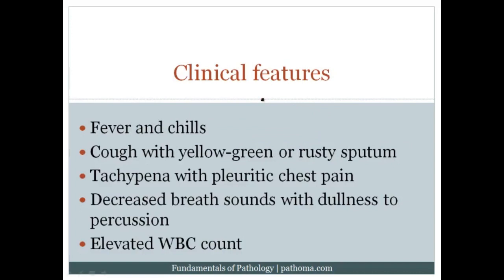Clinically, patients with pneumonia present with fever and chills, because organisms often leak into the blood. There can be cough with yellow-green or rusty sputum — yellow-green represents pus, rusty sputum represents blood. Tachypnea with pleuritic chest pain can also be seen. Pleuritic chest pain arises when breathing in stretches the pleura, causing pain. The pleura is innervated, and bradykinin and prostaglandin E2 — generated by the inflammatory response — are the two key mediators of pain.